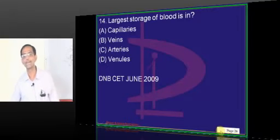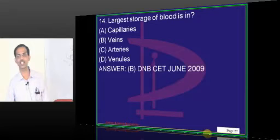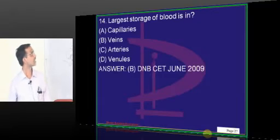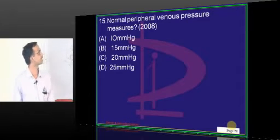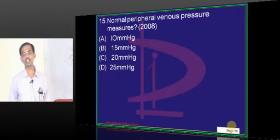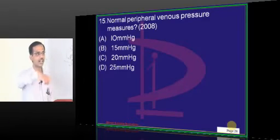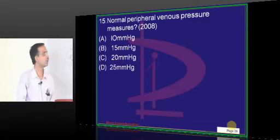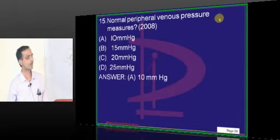Largest storage of blood is in the veins — they contain roughly 55 to 60% of blood, so they are called capacitance vessels. Normal pressure in the venous circulation: 25 is too high; the fluid has to leave at the arteriolar end and enter at the venous end, so pressure must be very low. The answer is 10 mmHg — it is that low.